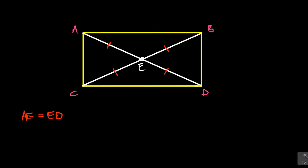To bisect is to divide a line at its center. So we're saying AE is equal to ED, but at the same time, CE is equal to EB. That's a very important special property. So AE = ED = CE = EB. That's a very special property when it comes to a rectangle. We're saying the diagonals bisect each other, and they are equal in length. So that is what you need to know whenever you are dealing with a rectangle.